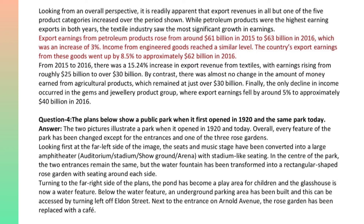The plans below show a public park when it first opened in 1920 and the same park today. The two pictures illustrate a park when it opened in 1920 and today. Overall, every feature of the park has been changed except for the entrances and one of the three rose gardens. Looking first at the far left side of the image, the seats and music stage have been converted into a large amphitheater with stadium-like seating. In the center of the park, the two entrances remain the same, but the water fountain has been transformed into a rectangular-shaped rose garden with seating around each side.